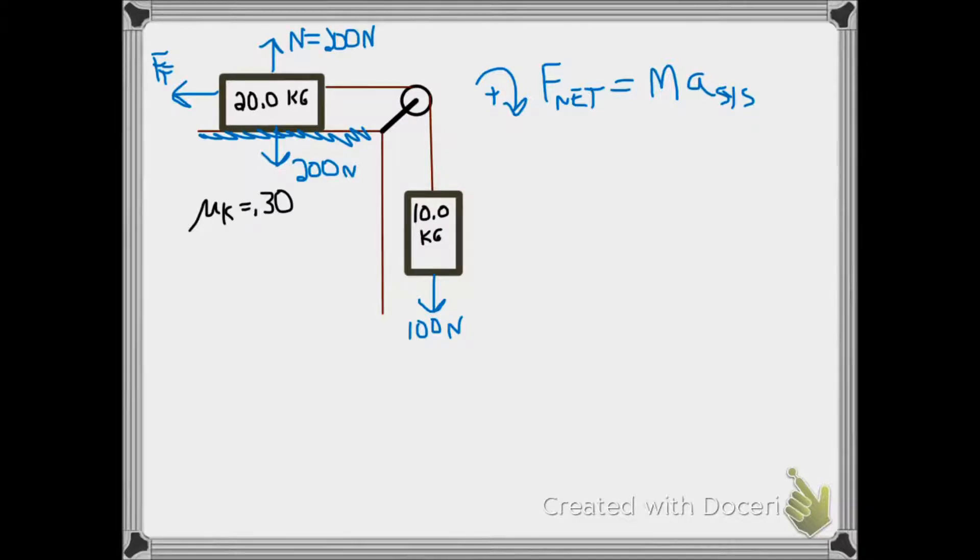We always get F net from the diagram, so in this case we have the 100 newton force going with our frame. We subtract the friction force going against our frame. That equals the system mass of 20 plus 10 times the acceleration of the system.